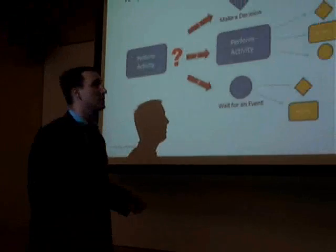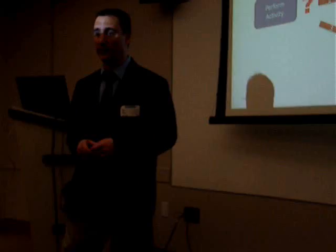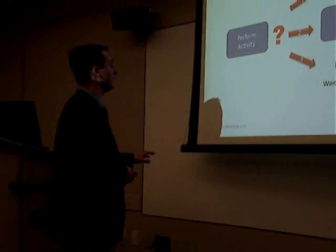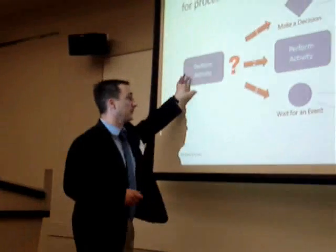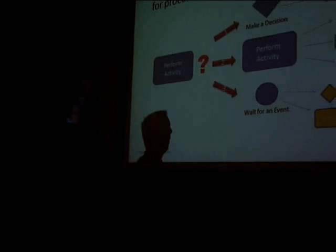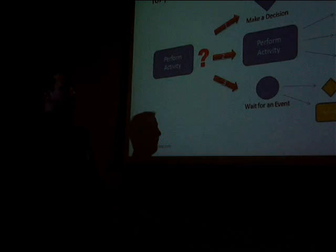The rules of BPMN can be used as a road map for discovering processes. I showed very briefly about an activity that's performed — something that gets done. After you get something done, what's next? You can do one of three things: make a decision, perform an activity, or wait for an event.